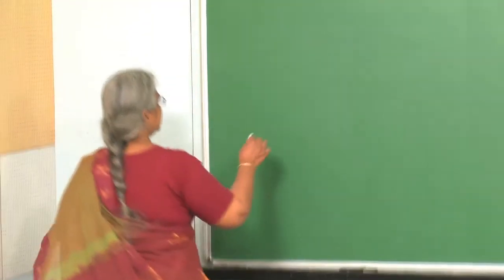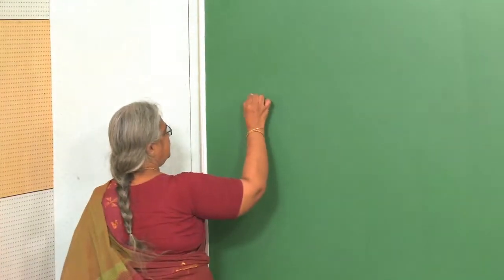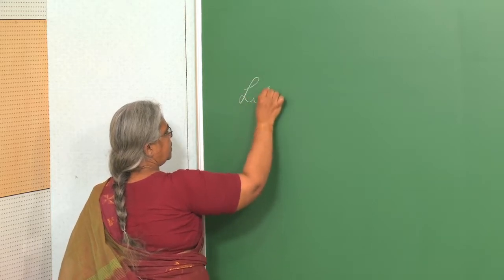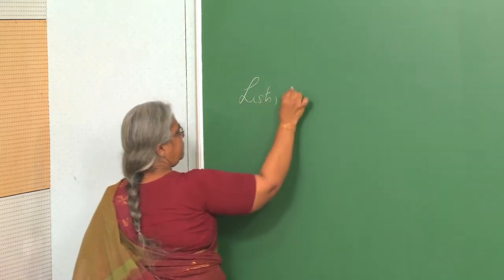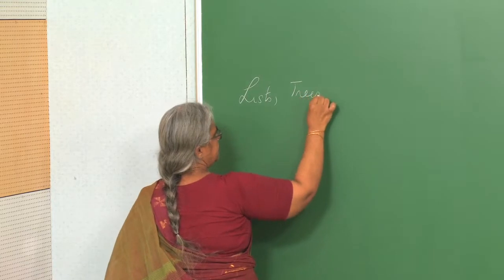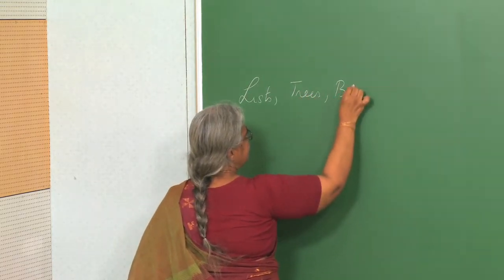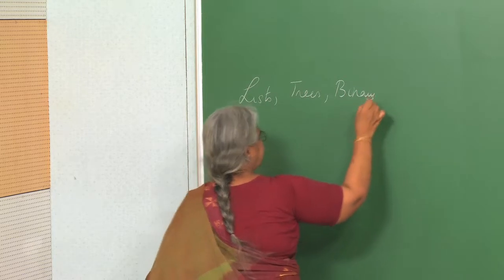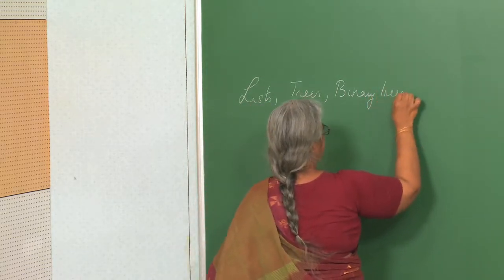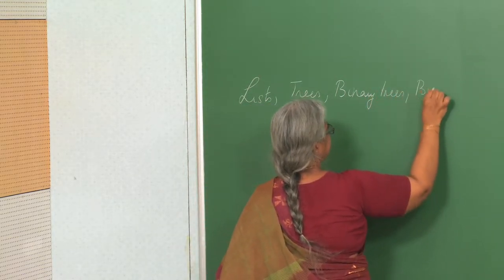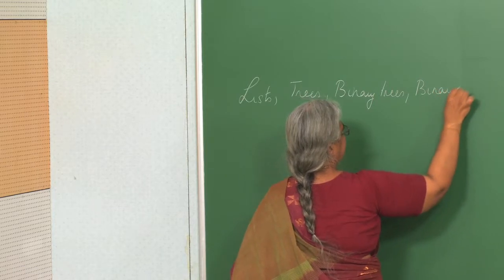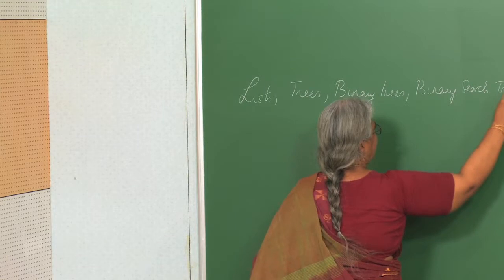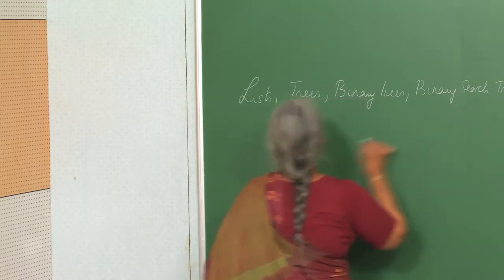In the last few lectures, we learned about different types of data structures. We talked about lists, then trees, then specifically binary trees, binary search trees, and priority queues. This is what we have studied.